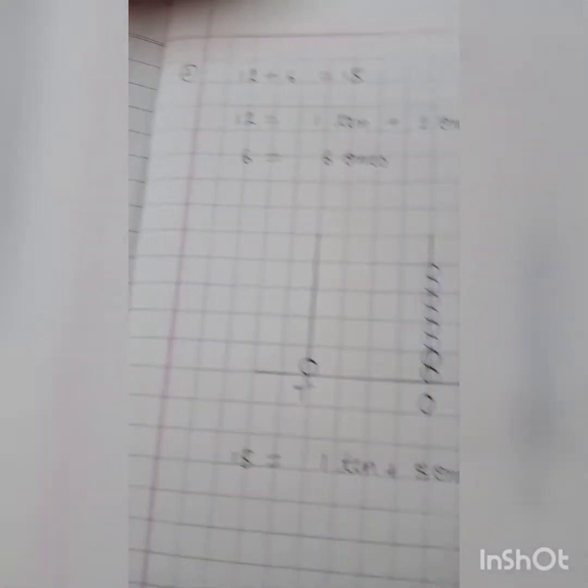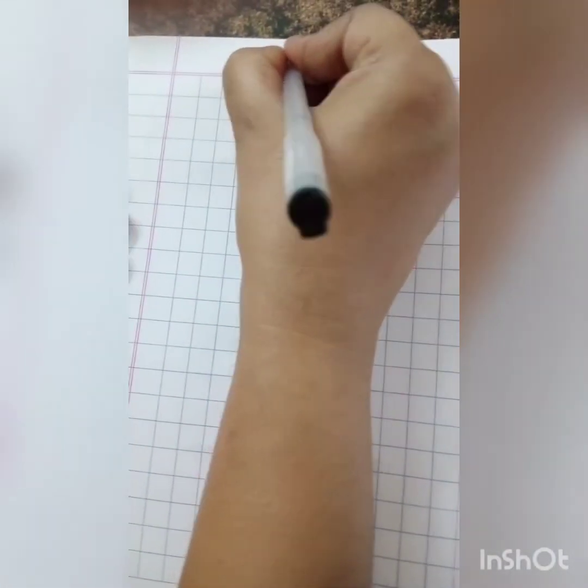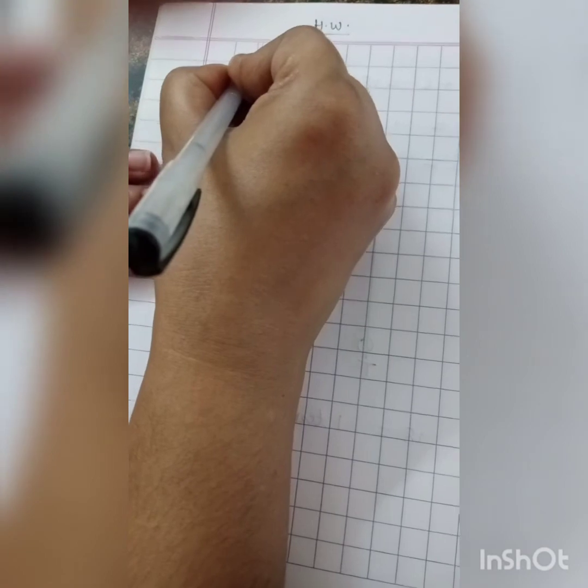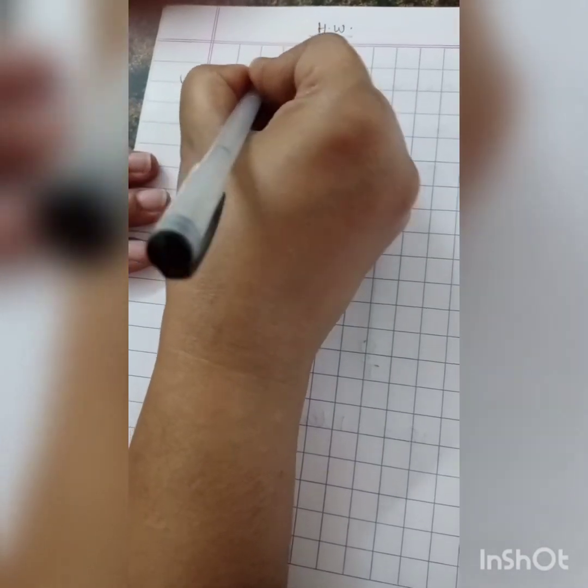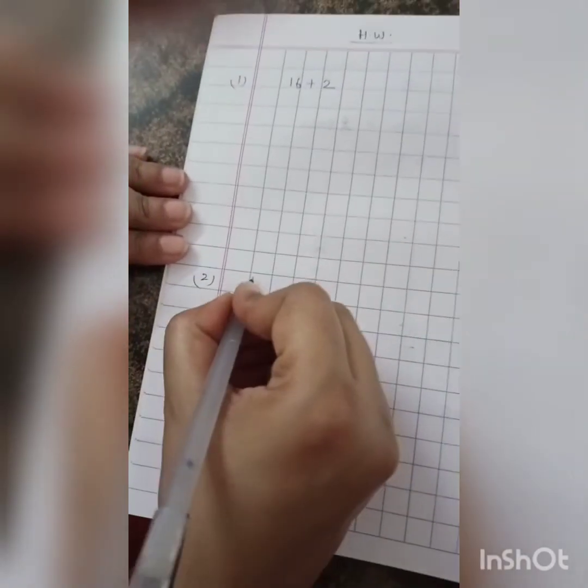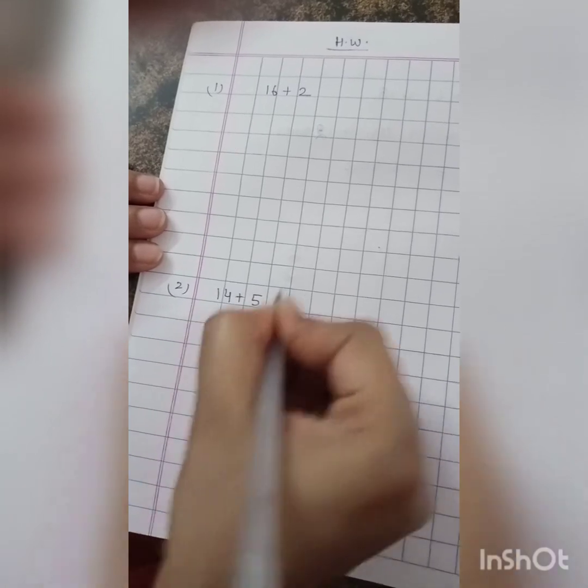So children, you all have to do this classwork also in your math copy, and ma'am is going to give you 2 homeworks also. This also you have to do in your math copy, and your math copy is your square line copy. The first question is 16 plus 2, and the second question is 14 plus 5. Okay children.